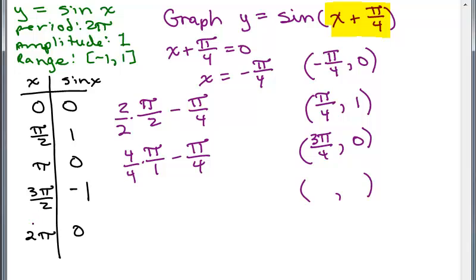We could also take 3π/2 and subtract π/4, and then 2π and subtract π/4. But here's an easier way: the x coordinates go up by the same amount. For y equals sine of x I'm going up by π/2 each time. Here, from -π/4 to π/4 I'm adding 2π/4. Then adding 2π/4 again gives 3π/4, then 5π/4, then 7π/4 for my fifth key point.